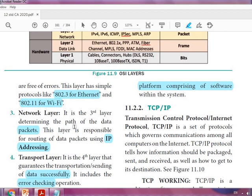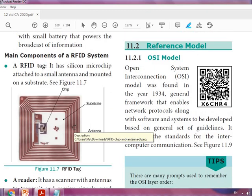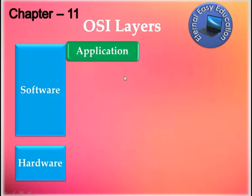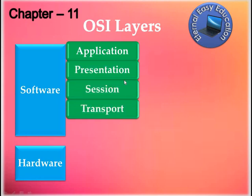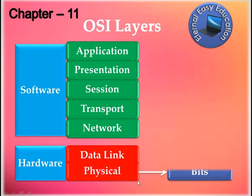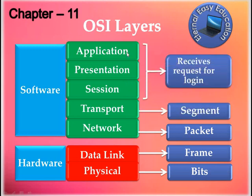The OSI model, even though it has seven layers, is very easy to learn. To recap: Software layers are Application, Presentation, Session, Transport, and Network. Hardware layers are Data Link and Physical. In the Physical layer, data is in bits; Data Link is frames; Network is packets; Transport is segments; and Session, Presentation, and Application together handle data as a login request. That's all for this session — learn well, thank you, have a good day.